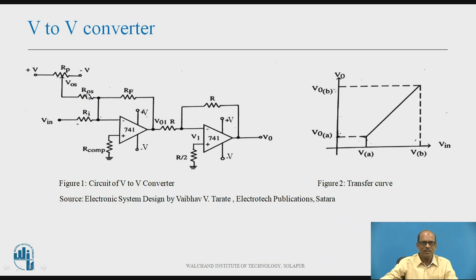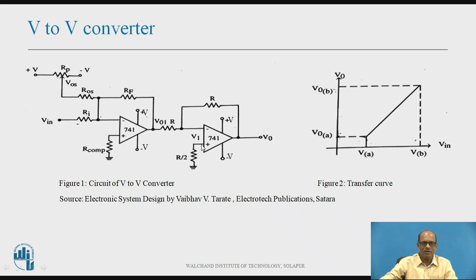V-os is the offset voltage, which is obtained from a potentiometer Rp, where the variable point is connected, and plus V and minus V are the power supplies. The second operational amplifier is connected as an inverting amplifier with Rf equal to R and R1 equal to R. Therefore, the gain of the second stage is minus 1.